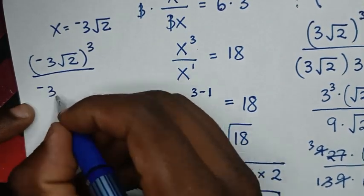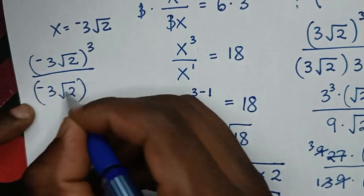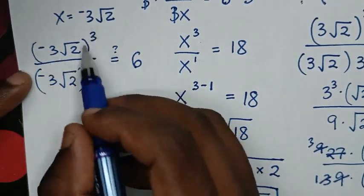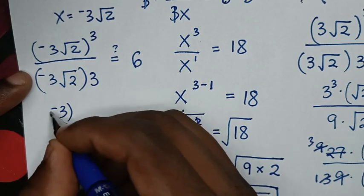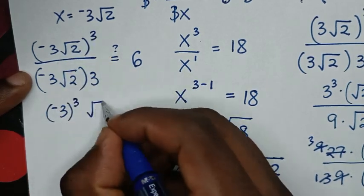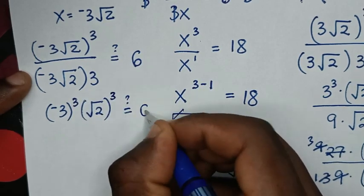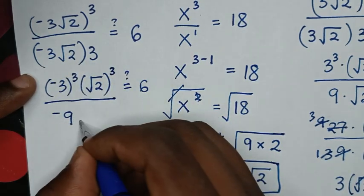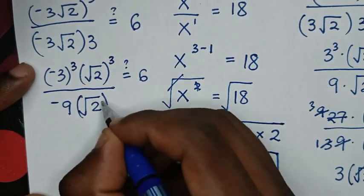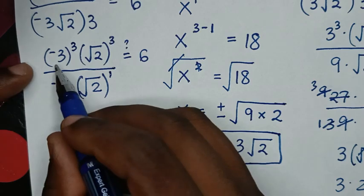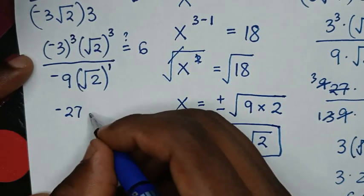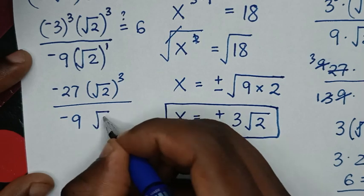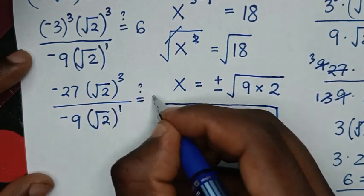Then negative 3 square root of 2 bracket power 3. We take this power 3 inside: it will be negative 3 bracket power 3 times square root of 2 bracket power 3. In the denominator it will be negative 3 times 3, which is negative 9, times square root of 2 bracket power 1. From negative 3 power 3 it is negative 27, times square root of 2 bracket power 3 over negative 9 times square root of 2 bracket power 1.